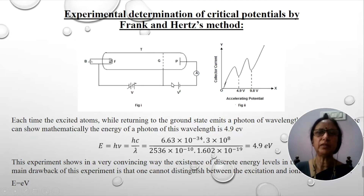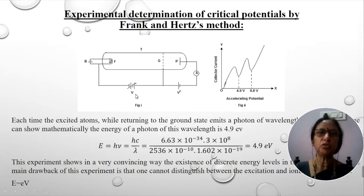The potential V' is kept constant at 0.5 volts, and the potential V is varied between 0 to 60 volts. A plot of collector current versus accelerating potential is plotted, and the graph is as shown in figure 2.